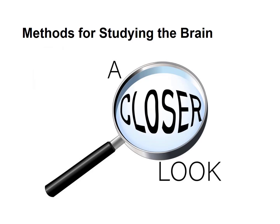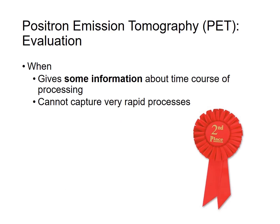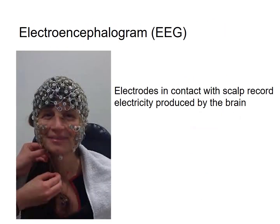Let's take a look at some methods that are used for studying the brain. The last technique that we'll talk about today is the electroencephalogram. In this technique, a researcher would place electrodes on the scalp of a participant and record the electricity observed at each one.